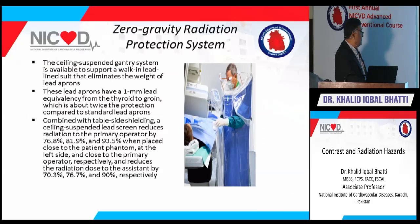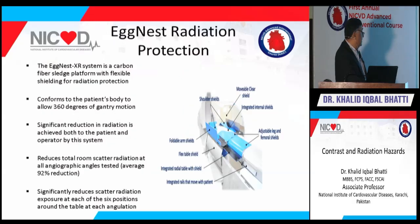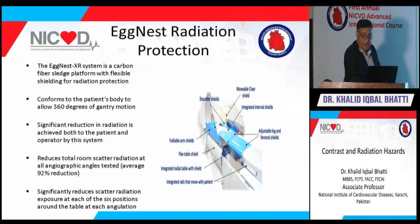Advanced protection systems include the hollow gravity radiation protection system and ceiling-suspended gantry systems that support the weight of lead suits, which provide 1 mm lead equivalency from thyroid to groin. The EggShell radiation protection system is a carbon fibre platform with flexible shielding that contours to the patient's body and allows 360-degree gantry motion.